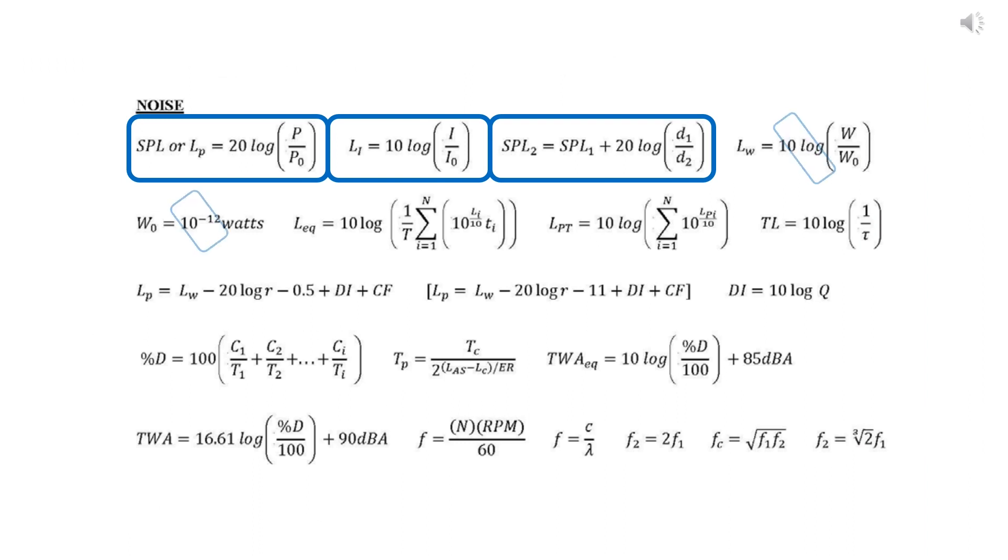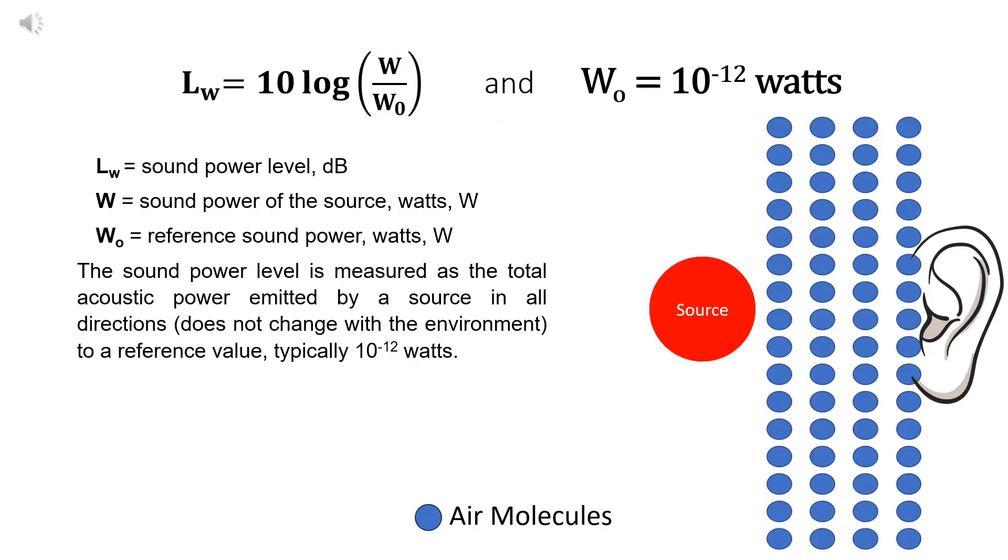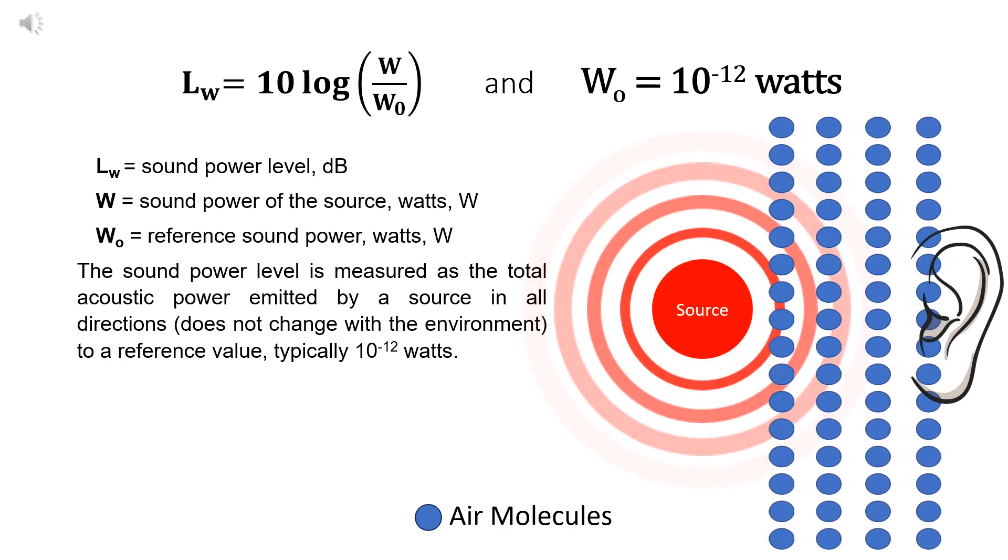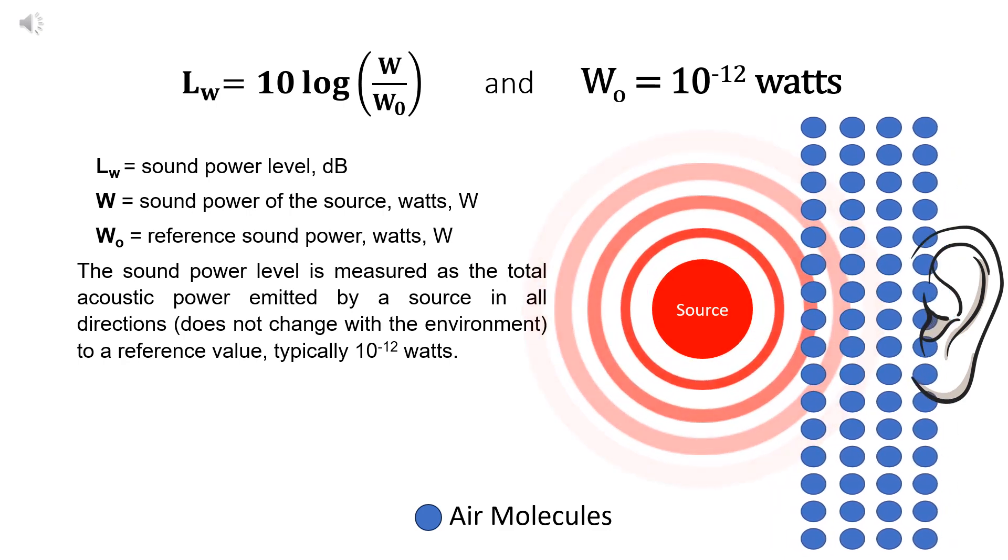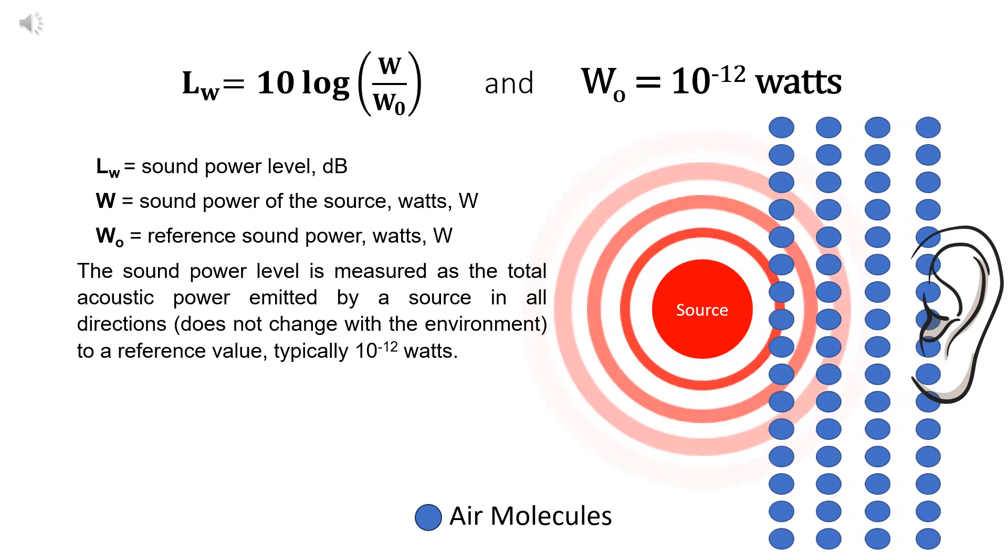Now let's go to the fourth and fifth equation. Equation number 5 is actually part of equation number 4. This is the sound power level equation, which is a measure of total acoustic power radiated by a sound source in all directions. Sound power level is different from sound pressure level, because sound pressure level measures the intensity at a specific point in space. But sound power level focuses on the total energy output of the source itself and is independent of the distance from the source or the acoustic environment. The reference or the base sound power, which is 10 to the power minus 12 watts, is the lowest sound people with excellent hearing can hear.